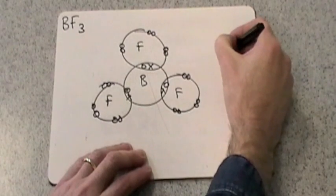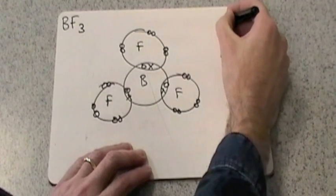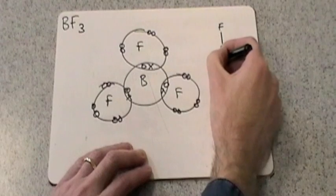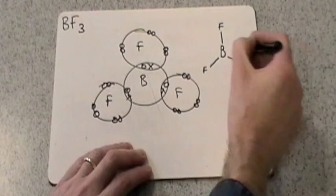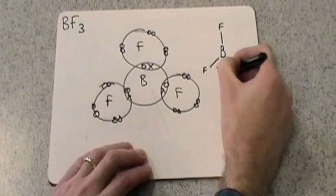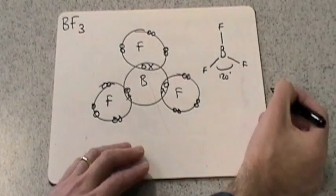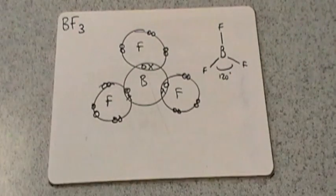So let's draw it now. So we've got B in the middle. We've got an F straight up. Try and make it look like 120 degrees if you can. So that would be a trigonal planar molecule.